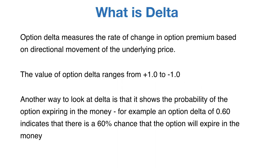Here are some basics about Delta. Option Delta measures the rate of change in option premium based on the directional movement of the underlying price. That is, it shows that if the underlying asset price changes, then how much would the option price change by? The value of the option Delta ranges from plus 1 to minus 1. Another way to look at Delta is that it shows the probability of the option expiring in the money. For example, an option Delta of 0.6 indicates that there is a 60% chance that the option will expire in the money.